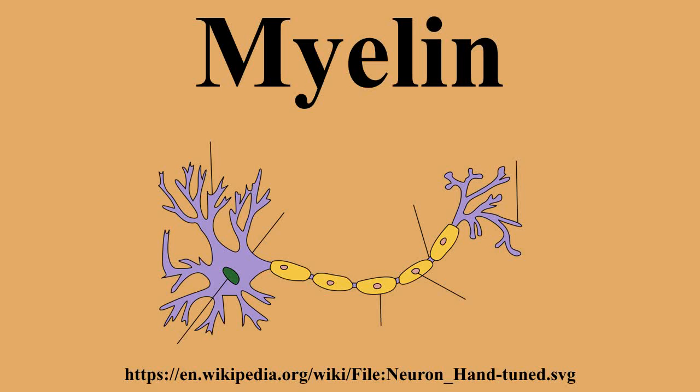The primary lipid of myelin is a glycolipid called galactocerebroside. The intertwining hydrocarbon chains of sphingomyelin serve to strengthen the myelin sheath. In the brain, the myelin sheath covers the fibers of the corpus callosum, which constitute the inner part of the cerebral hemisphere function.